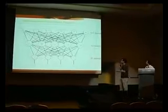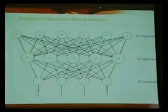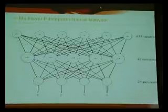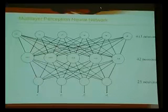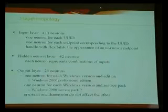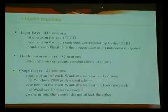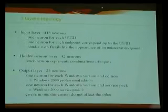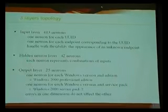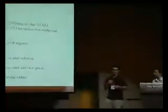Here we have a draft of the network used by the DCRPC endpoint mapper. First we have an input layer, then in the middle we have a hidden layer, and at the bottom we have an output layer. All the neurons are connected to the neurons in the layer below. In this topology we have 413 neurons in the input layer — one neuron for each UUID and one neuron for each endpoint. In that way, we can still get some information if we don't know the endpoint but we know the UUID.